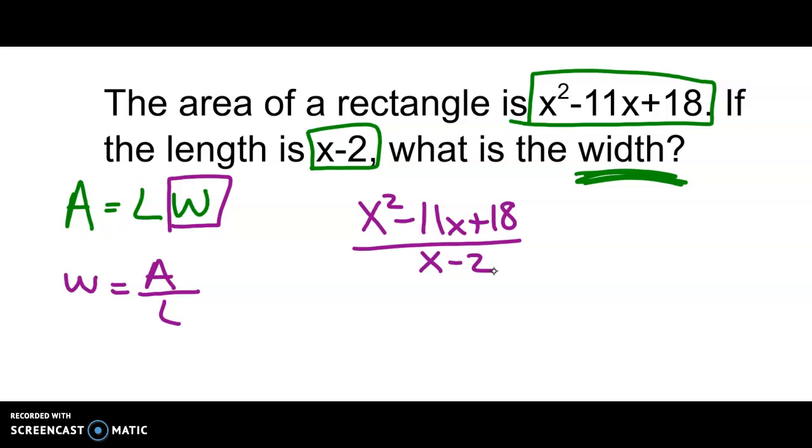Now the easiest way is to factor the numerator. So factoring the numerator, your bottom x minus 2 cannot be factored so it's going to remain the same.